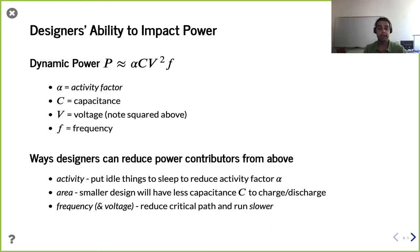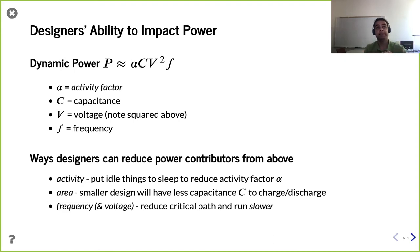Frequency and voltage work in tandem. If you can reduce V and F, that will definitely save a lot of power, though whether that's possible depends on your performance target and how many cycles you need to get things done. Your opportunity as a designer is the critical path: a short critical path allows you to run at high clock frequency if you want speed, or save power by running slow.